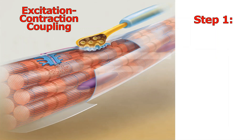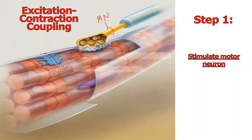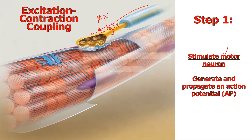Step one of excitation-contraction coupling — sometimes just called EC coupling — is that we have to stimulate a motor neuron. That yellow structure here is the motor neuron. 'Motor' means it's sending a signal away from the brain or spinal cord and toward an effector — in this case a skeletal muscle. Just like throwing a pebble in a pond creates ripples, we need to send ripples of information down the length of this neuron to the terminal knob. These ripples are called action potentials, and we not only need to generate one but propagate it — push it down the length of that neuron. So step one is generation and propagation of an action potential.